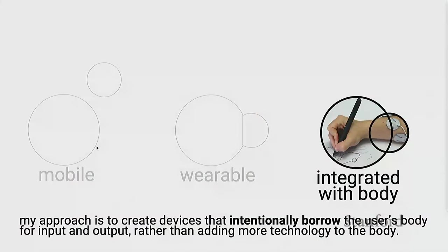The system intentionally borrows parts of the user's body — in this case the muscles — to perform a function. If you were asked to list all the hardware components of Muscle Plotter, at some point you'd have to say 'the muscles,' because without the muscles there would be no plotting, no output.